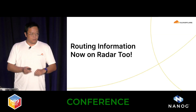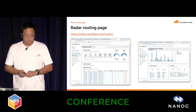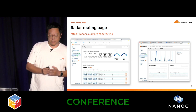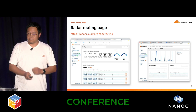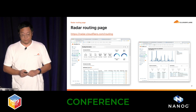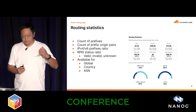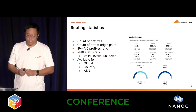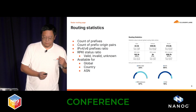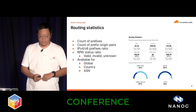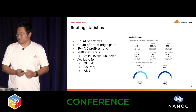Now to the main topic: we now have routing information on Radar too. The routing information is available at radar.cloudflare.com/routing, and it contains a good deal of BGP goodies. Starting from routing statistics, we now have a count of prefixes, prefix-origin pairs, IPv4/v6 prefix ratios, and also the RPKI status ratio.